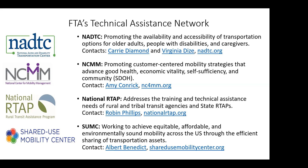The Federal Transit Administration's Technical Assistance Network exists to promote mobility for all Americans through the provision and coordination of transportation services. Through the Coordinating Council on Access and Mobility, or CCAM, technical assistance partnerships provide a range of services and resources to allow stakeholders at all levels to build capacity, provide training through webinars and workshops, and to do research. The technical assistance centers featured today are the National Aging and Disability Transportation Center, the National Center for Mobility Management, the National Rural Transit Assistance Program, and the Shared Use Mobility Center.